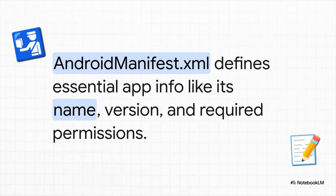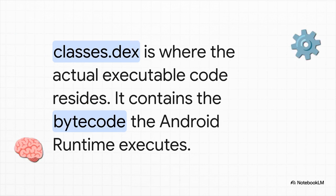First up, you've got the AndroidManifest.xml. Think of this as the app's official passport — it's a super critical file that tells the Android system everything it needs to know right up front: the app's name, its version number, and all the permissions it needs, like access to your camera or your contacts. Next, we have the classes.dex file. If the manifest is the passport, this is the app's brain. It contains all of the compiled code — the bytecode that your phone's processor reads and executes to make the app do its thing. All the logic lives here.